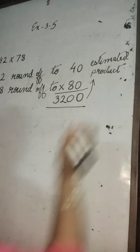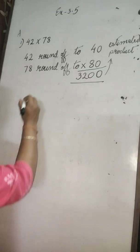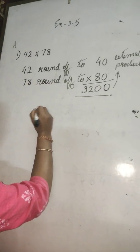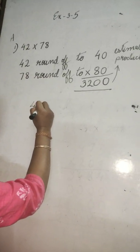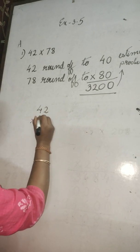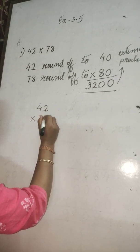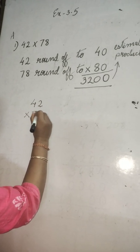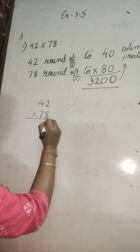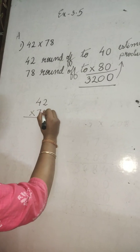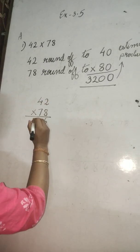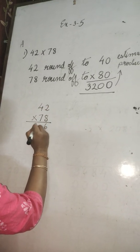Now we have to find out the exact product. Exact product — you multiply with the exact numbers. 8 times 2 is 16 — write 6, carry 1. 8 times 4 is 32 plus 1 is 33.